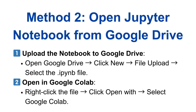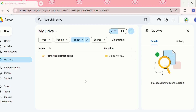The second method is to open a Jupyter notebook from Google Drive. You can store .ipynb files in Google Drive and open them in Colab. First, upload the notebook to Google Drive by clicking New, then File Upload, select the .ipynb file, and then open it in Google Colab by right-clicking the file, clicking Open With, and selecting Google Colab.